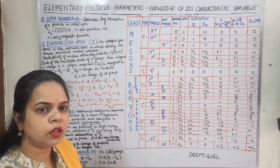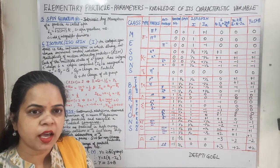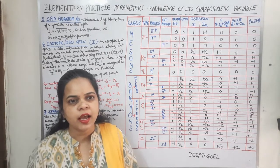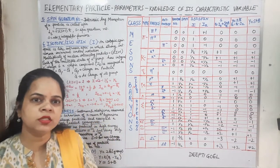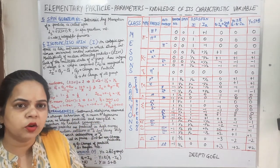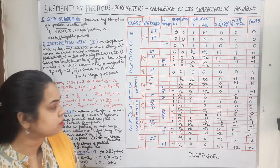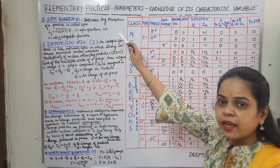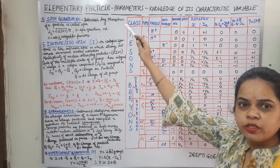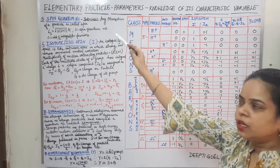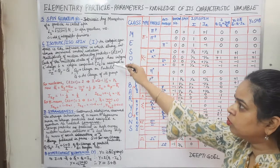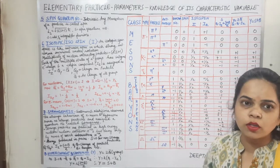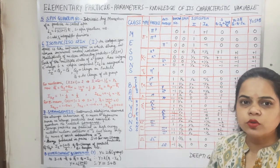All the fermions have half-integral spins and the mesons are zero integral spins. This was our next parameter, the spin. Next, we come to the isotopic spin or the isospin.